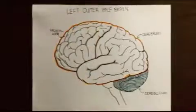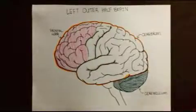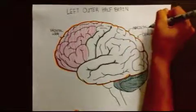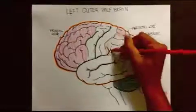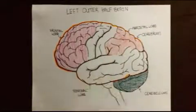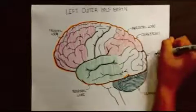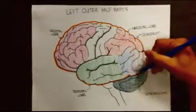Third, we have the frontal lobe, colored pink. The parietal lobe comes next, it's colored red. On the side of the brain, we have the temporal lobe in green. The final lobe is the occipital lobe, in blue.